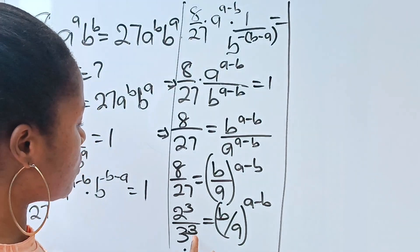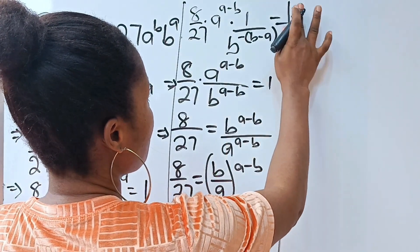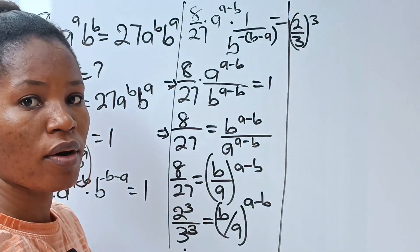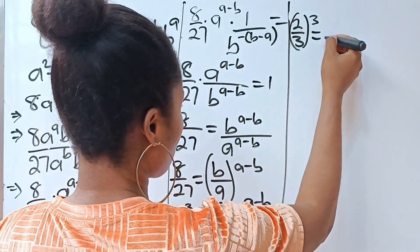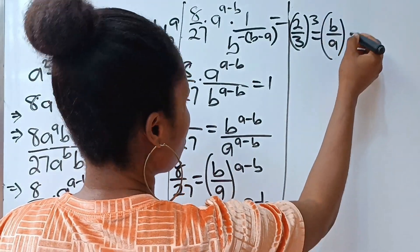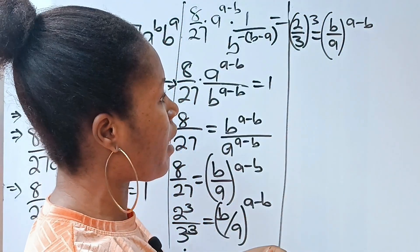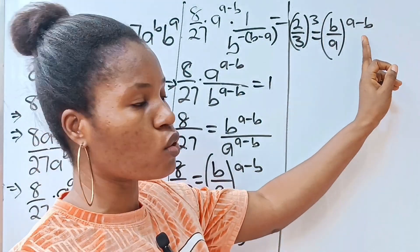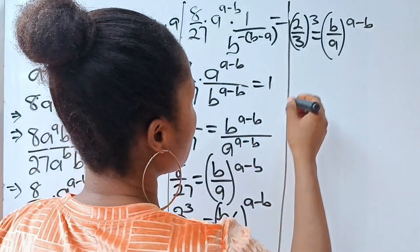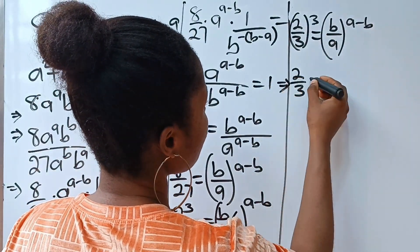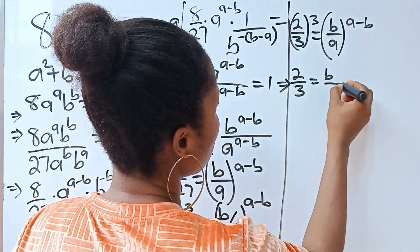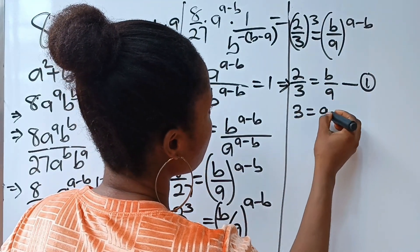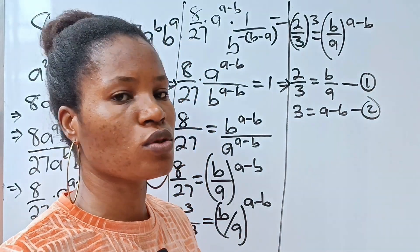Now, look at what we have here. The left-hand side can be written as 2 over 3 raised to the power of 3, since 8 is 2 to the power of 3 and 27 is 3 to the power of 3, and they share the same power. This equals b over a raised to the power of a minus b. By comparison, 2 over 3 equals b over a — let's call this equation 1 — and 3 equals a minus b — let's call this equation 2.